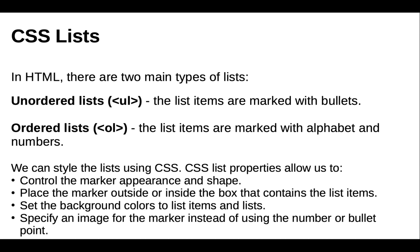When we add style to the list, we can style it using CSS. CSS list properties allow us to control the marker appearance and shape, place the marker outside or inside the box that contains list items, set a background color to the list items, and specify an image for the marker instead of using numbers or bullet points.